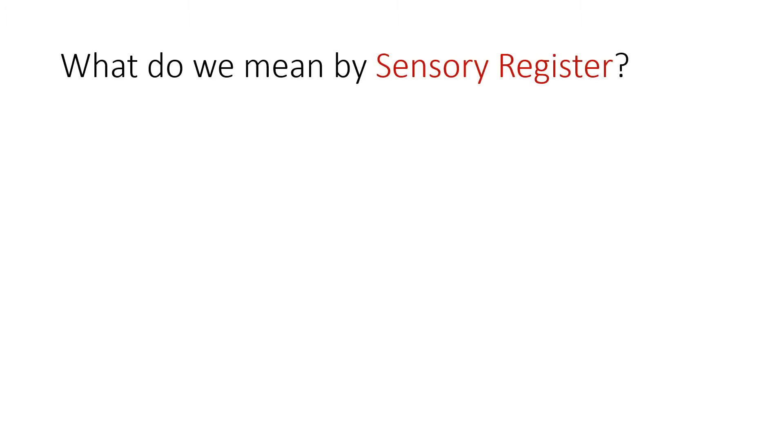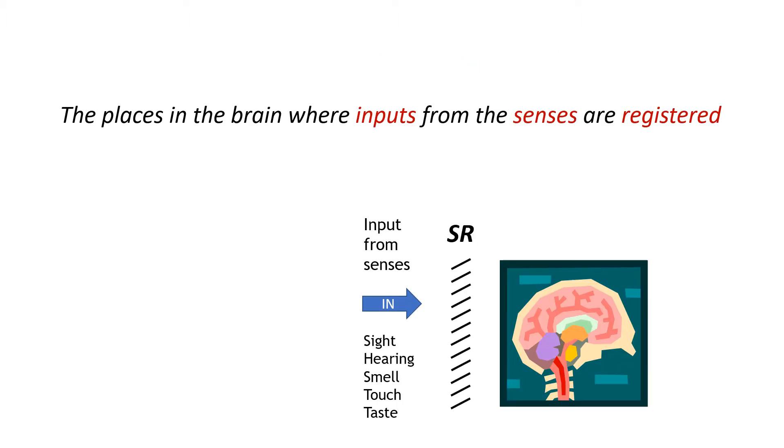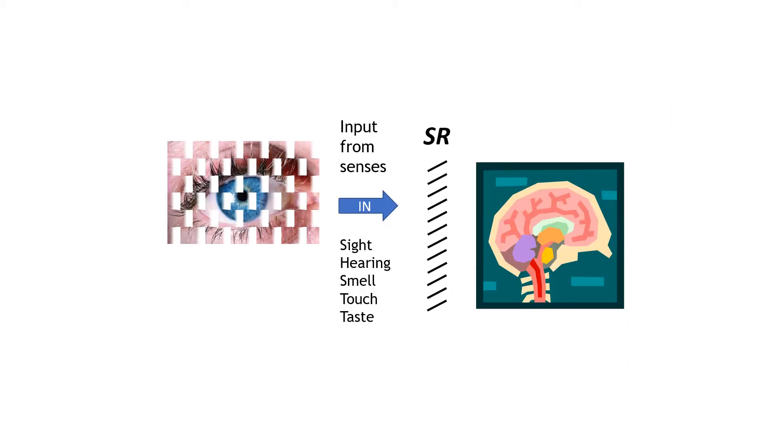We begin by describing the sensory register. In this model, these are the places in the brain where inputs from the senses are registered. For example, stimuli gathered by nerve endings in the eyes enter the brain through the sensory register.